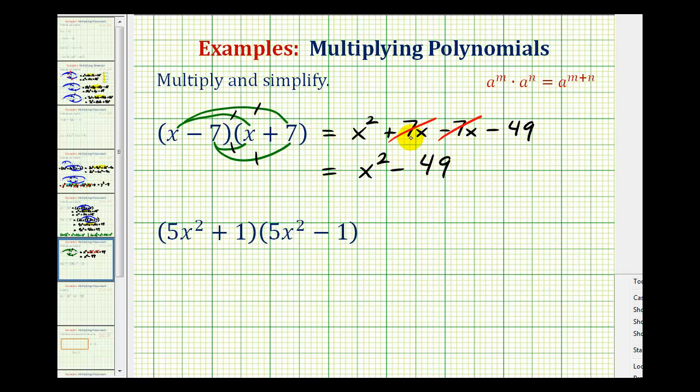Notice how the two like terms had a sum of zero. Let's take a look at our second example. Again we'll have four products: one, two, three, and four.